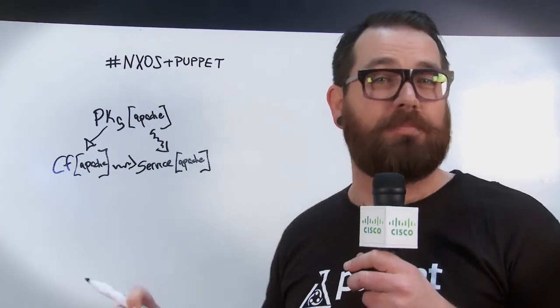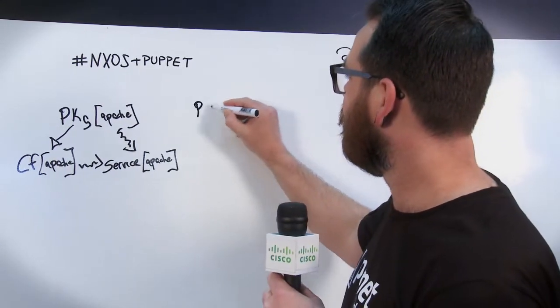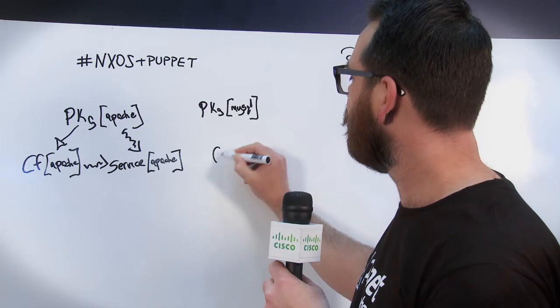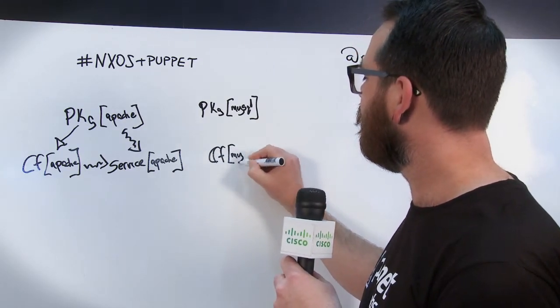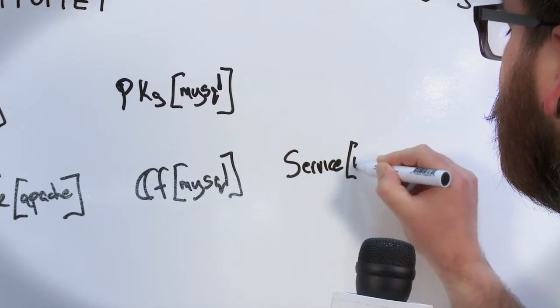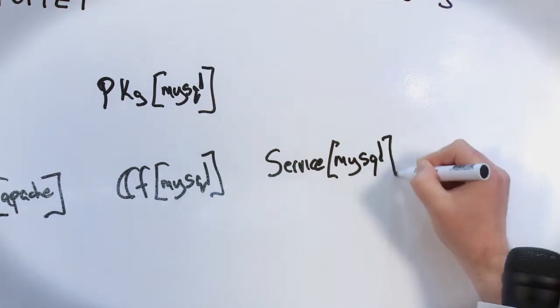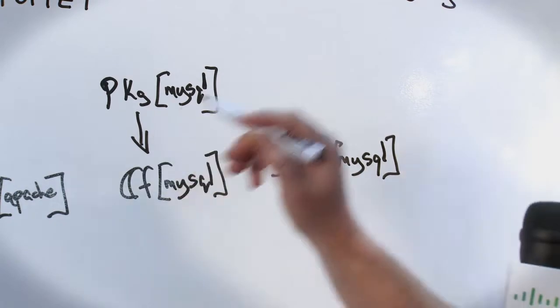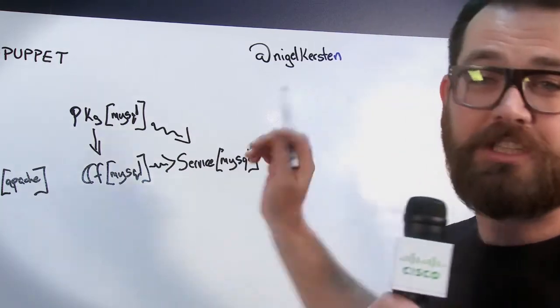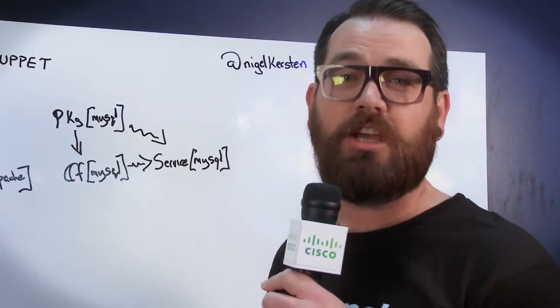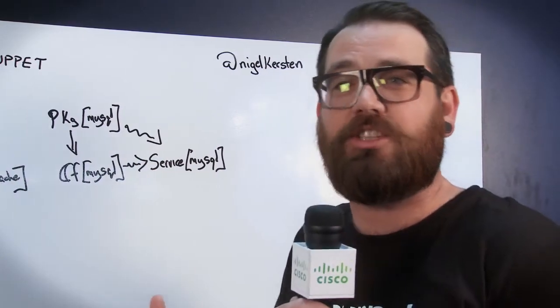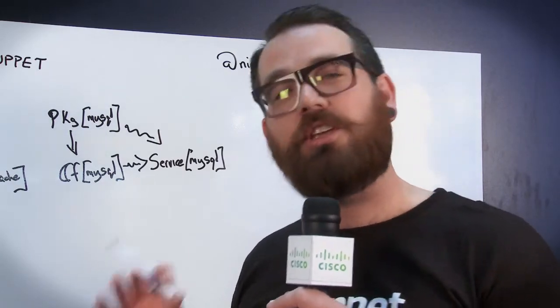Now I'm just going to replicate that same setup for the MySQL program itself. Again, we're drawing a relationship so that the package is down before the config file is. There's also these notification relationships. In the same way, when the MySQL config file gets changed, the service will automatically get restarted. I'm going to draw a whole class around that in Puppet terminology. That's basically a bucket you put your configuration into so you can treat it as a single entity.